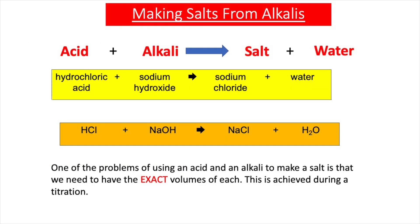In our previous video lessons on acids, bases and salts, we learnt that salts can be prepared from the reactions of acids and alkalis, and when an acid reacts with an alkali in a neutralisation reaction, a salt and water is formed. For example, hydrochloric acid reacts with sodium hydroxide to form the salt sodium chloride and water. One of the problems of using this method — an acid reacting with an alkali — is that you need the exact volumes of each for a neutralisation reaction to occur. This can be achieved by a titration.